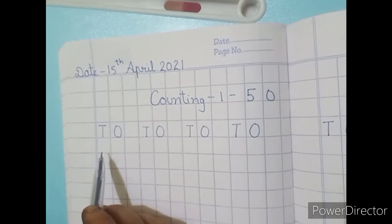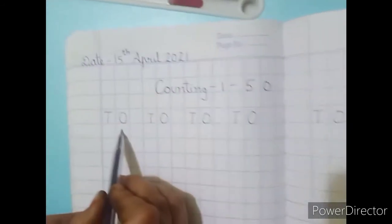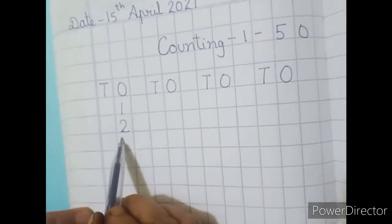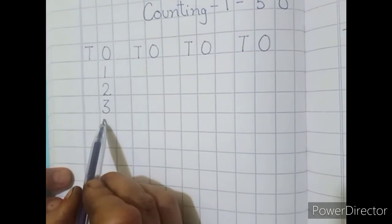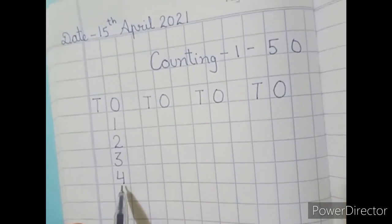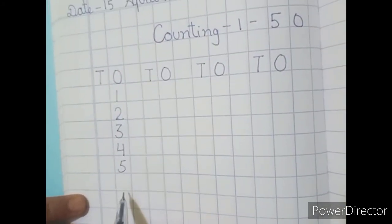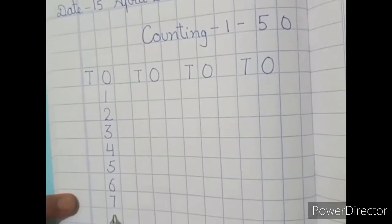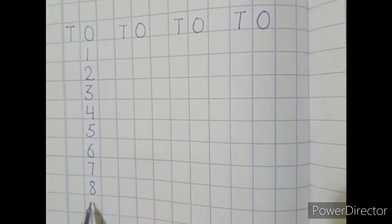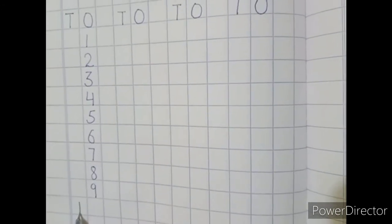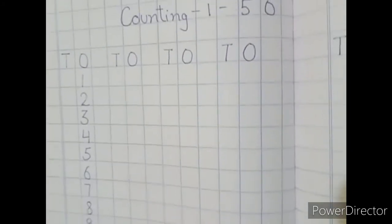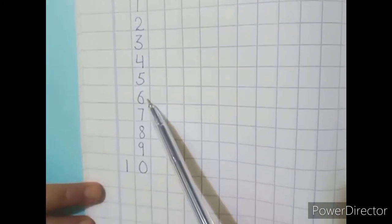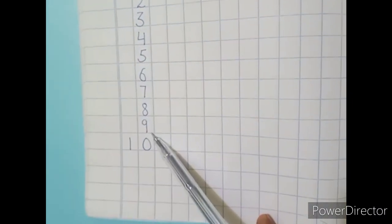Now I am writing one to ten. Making 1, then 2, now 3, now 4, now 5, now 6, next digit is 7, now 8, now 9, and last one is 10. I repeat again: 1, 2, 3, 4, 5, 6, 7, 8, 9, 10.